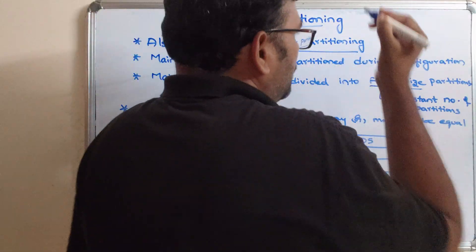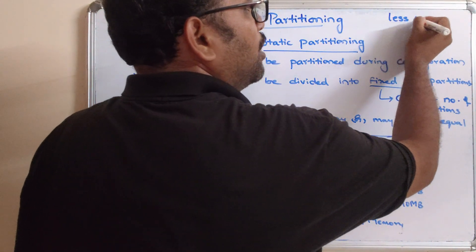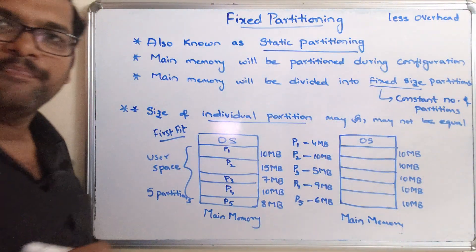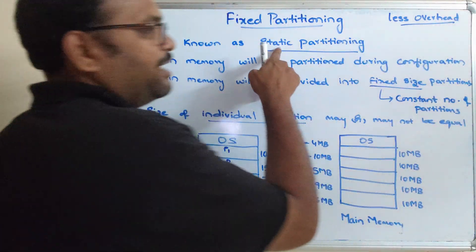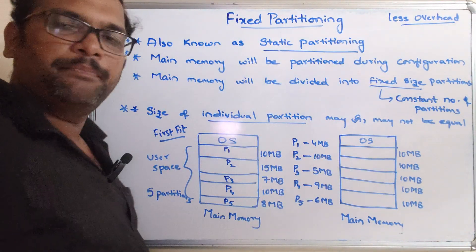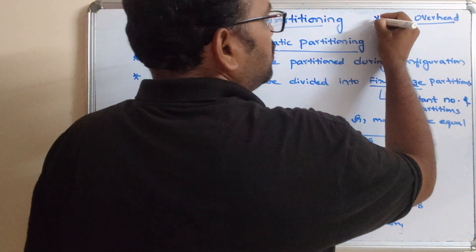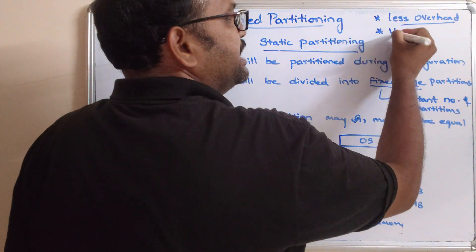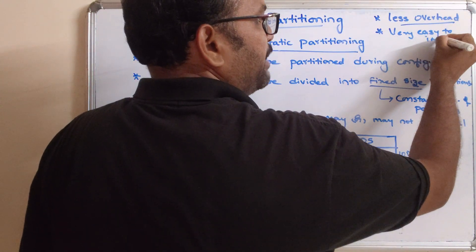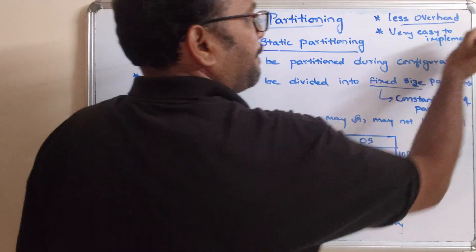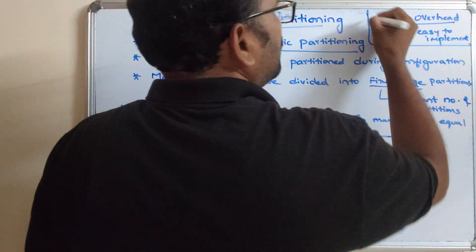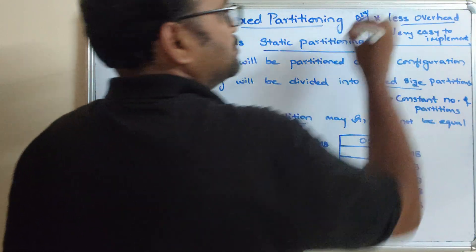If it is a static partitioning, there will be less overhead on the operating system while accommodating partitions to the processes, because it requires minimum resources to allocate memory to a particular process. Also, it is very easy to implement this fixed partition. These are all advantages.